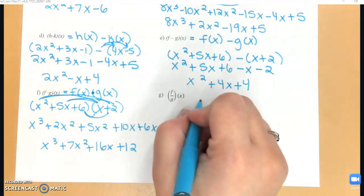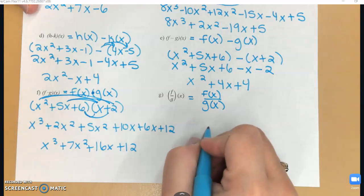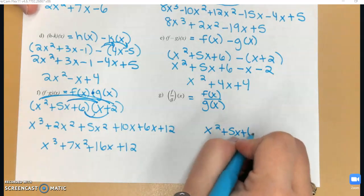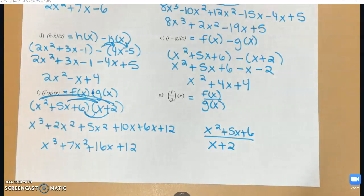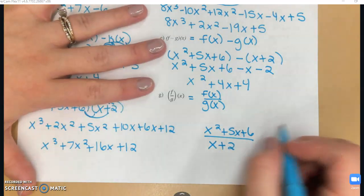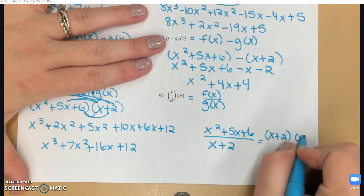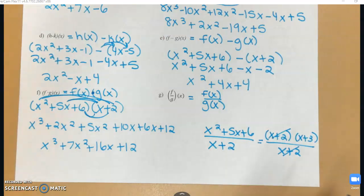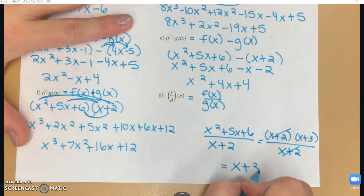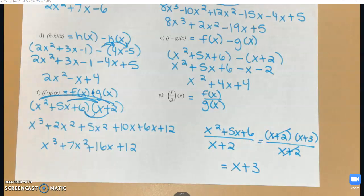The last one on the front side is the quotient, meaning I take f of x divided by g of x: x squared plus 5x plus 6 divided by x plus 2. Can I simplify this? Yes — I need to factor the top. Two numbers that multiply to 6 and add to 5 are 2 and 3, so the top factors into x plus 2 times x plus 3. The x plus 2 in the numerator and denominator divide out, leaving x plus 3. If you can't simplify, you just leave it as a fraction — sometimes you'll find a common factor and sometimes you won't.